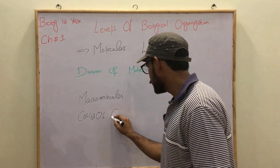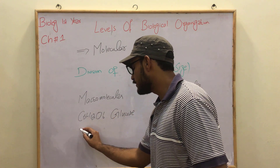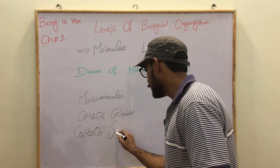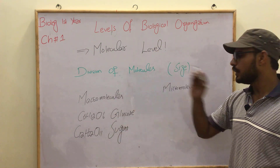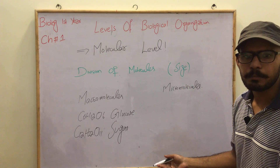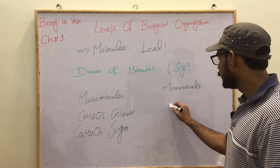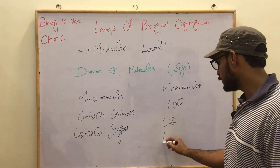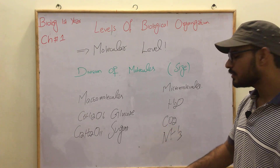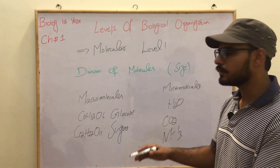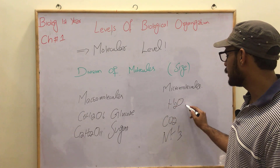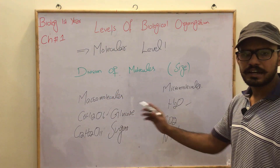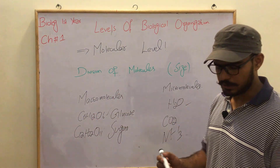This is a glucose example: C6H12O6. And this is a sugar example: C12H22O11 — in the case of macromolecules. If we talk about macromolecules, for example, water is also a macromolecule, carbon dioxide is also a macromolecule, ammonia is also a macromolecule. The macromolecules are very heavy. That's why we categorize them into macromolecules and micromolecules.